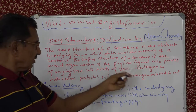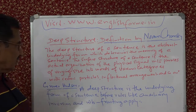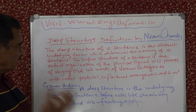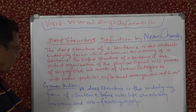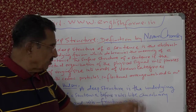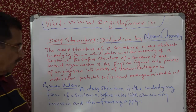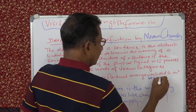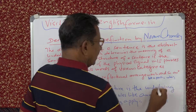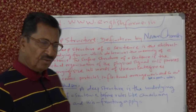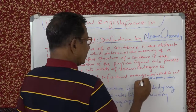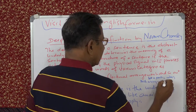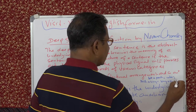The surface structure of a sentence is the actual organization of the physical signal into phrases of varying size, into words of various categories, with certain particles, inflectional arrangement, and so on. We saw yesterday that 'be + past' becomes 'was', and 'be + present' becomes 'is'. We also saw 'past + bring' — bring + past — becomes 'brought'.